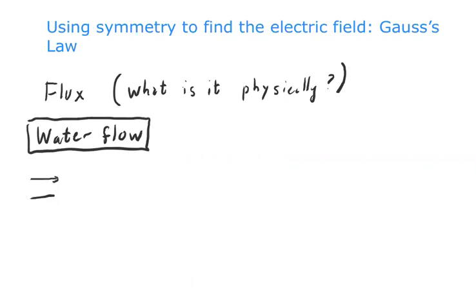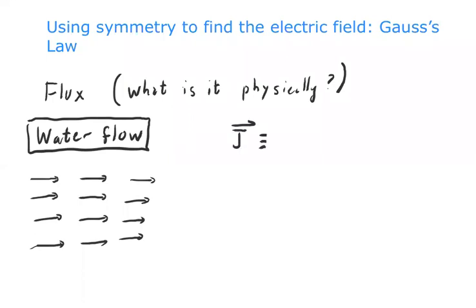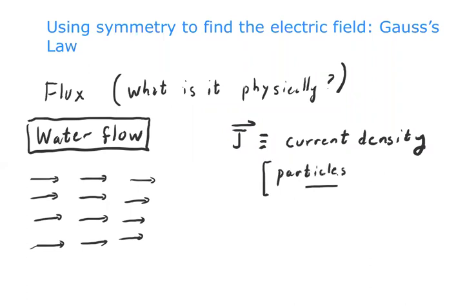Imagine looking at a stream of water particles moving from left to right, all moving with a certain velocity. We can define a vector J called the current density. It's a vector field, meaning at each point in the water there's a vector associated with it. It has magnitude and direction. Physically, the current density is the number of particles of water that pass a unit area per unit time.